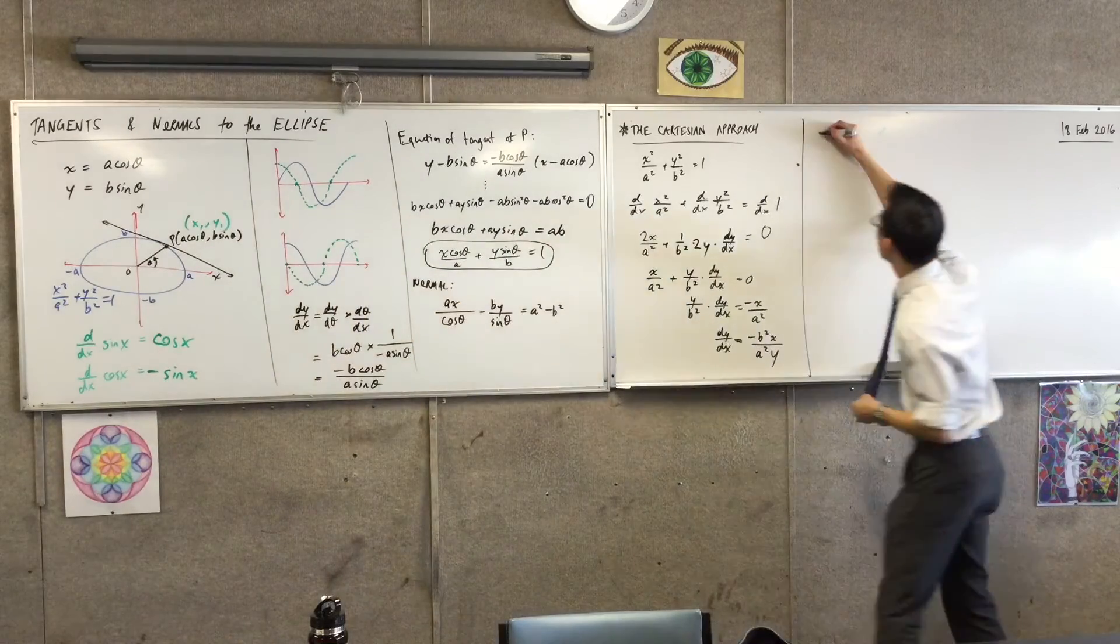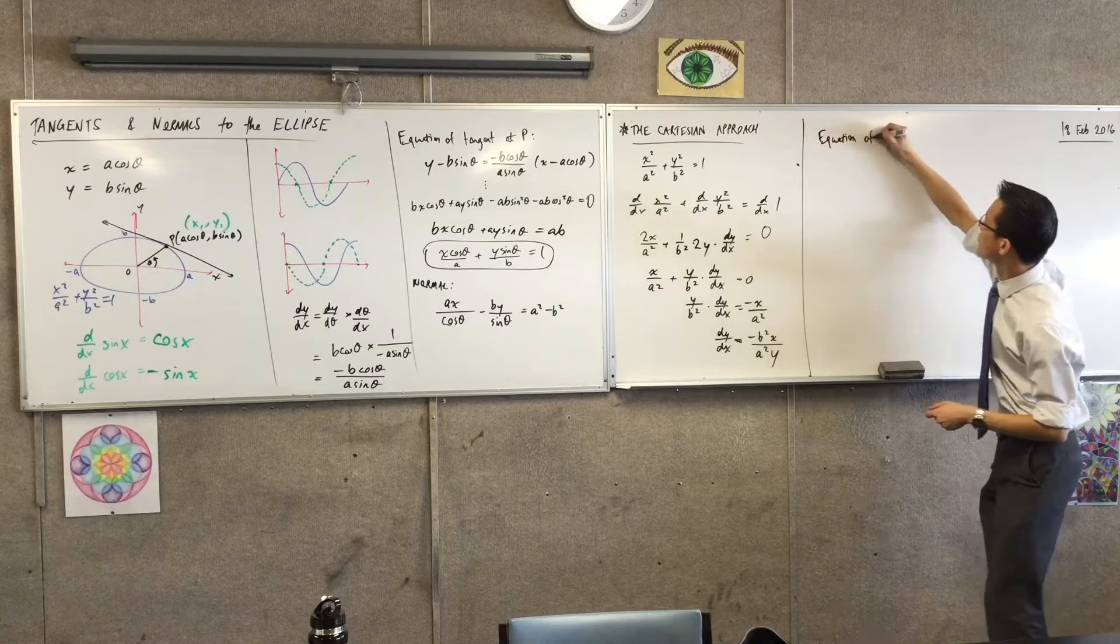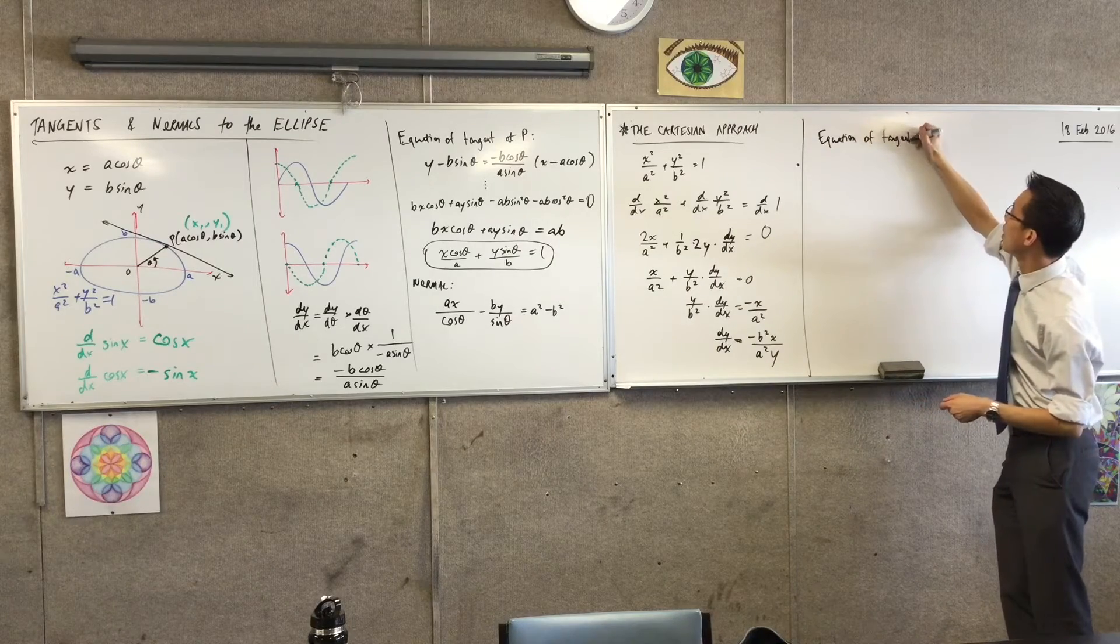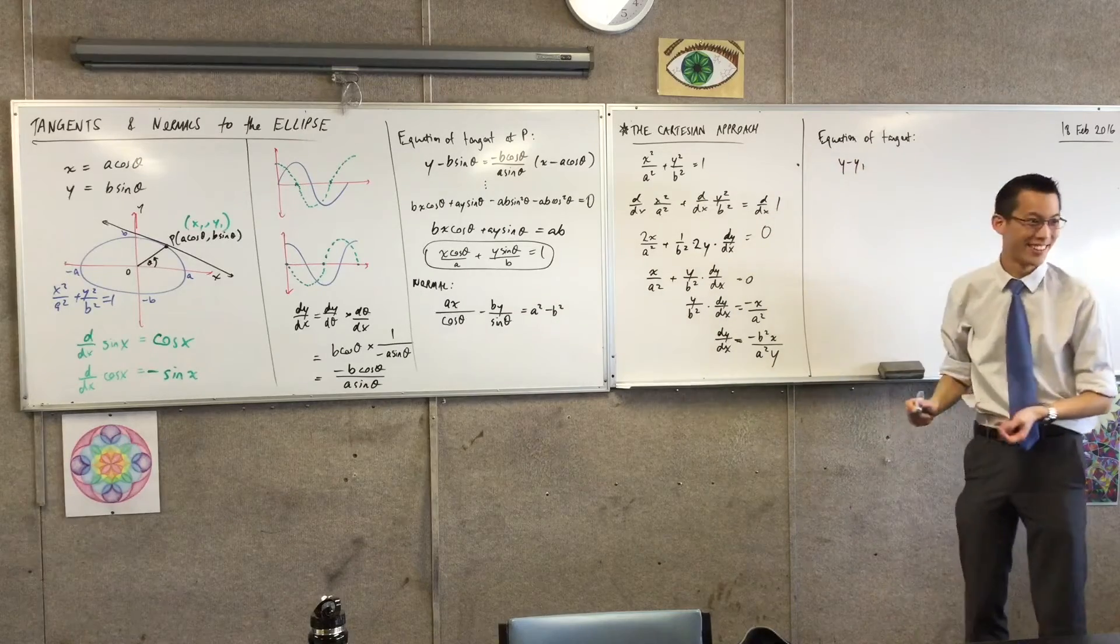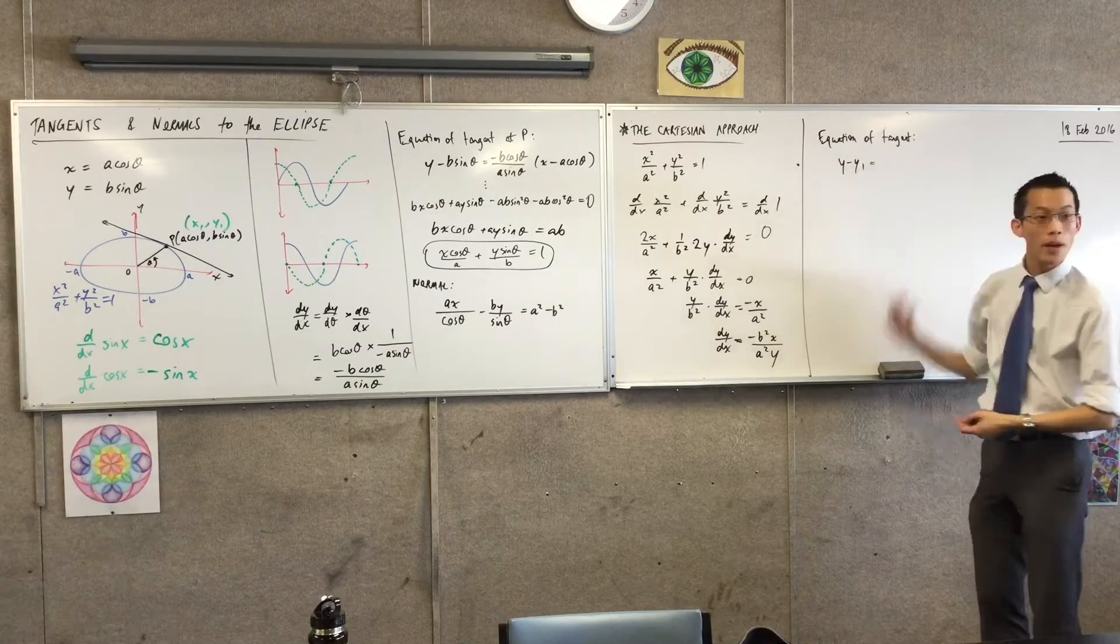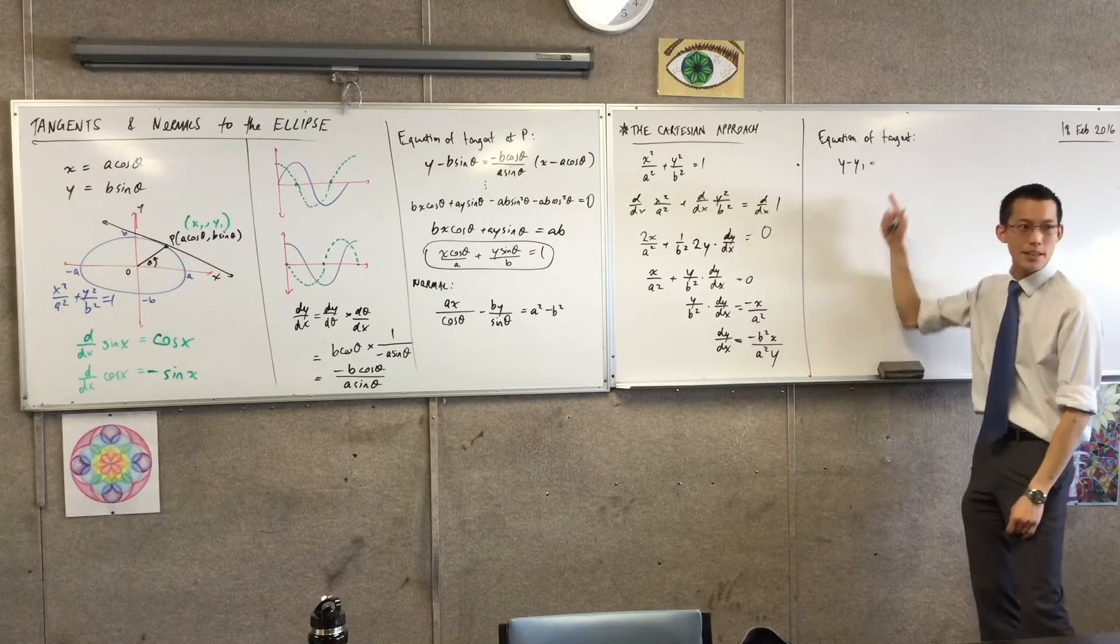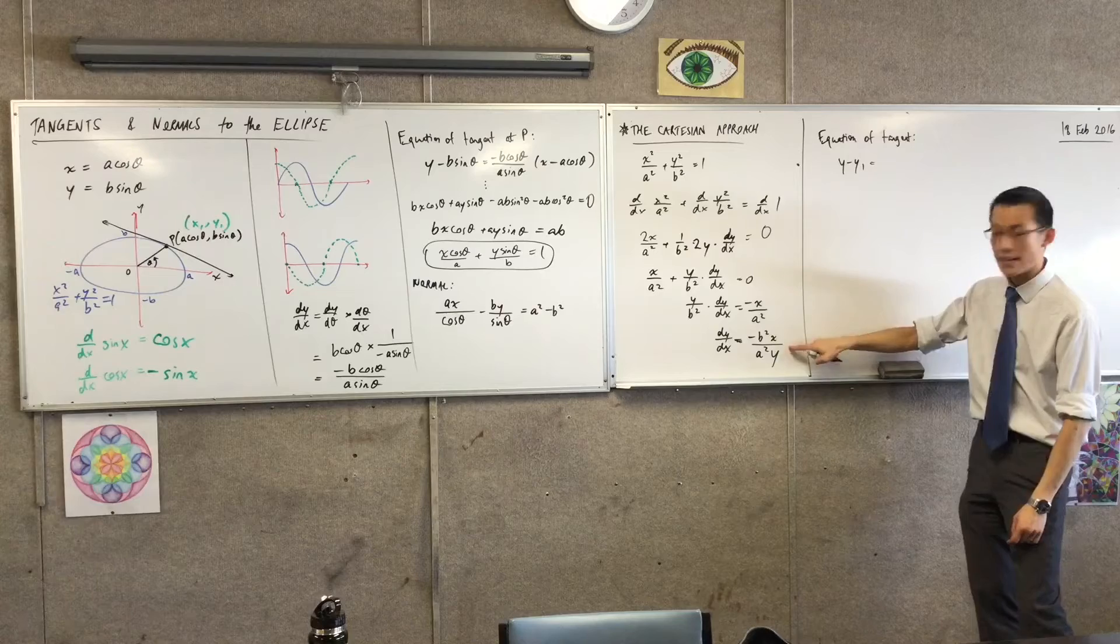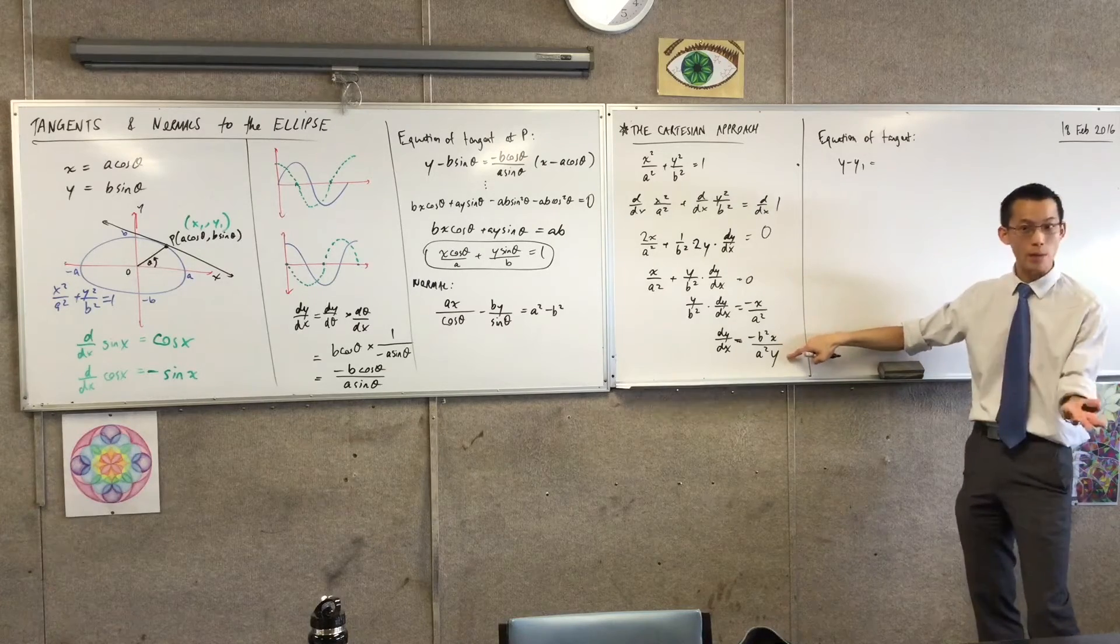So therefore, the equation of the tangent is y minus y₁ is literally y minus y₁. Like, that's the coordinates. But when I put in m, I don't write this. This is a function. m is a number, right? I want the gradient at the particular value for x equals x₁ and y equals y₁. Does that make sense?